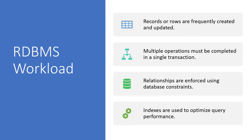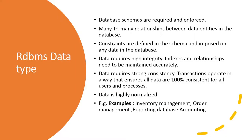RDBMS systems support workloads where records and rows are very frequently created and updated, multiple operations can be completed in a single transaction, and relationships are enforced through database constraints. You can use different types of indexes to optimize query performance. Database schemas are required — you define your table structure ahead of time and maintain relationships between tables using keys and constraints.